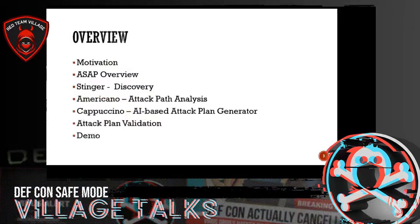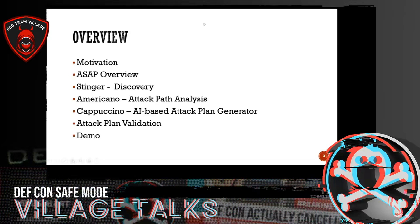Let's dive into the overview of the talk. What is the motivation? What is the overview of our system ASAP? There are three main modules in the system: Stinger, which is used for the discovery of information — both services and vulnerabilities in the network; Americano, which is used for analysis of different paths an attacker can take in a network; and Cappuccino, which is our AI-based autonomous attack plan generator. Finally, we do the validation of these attack plans, and we will jump into the demo after the presentation.